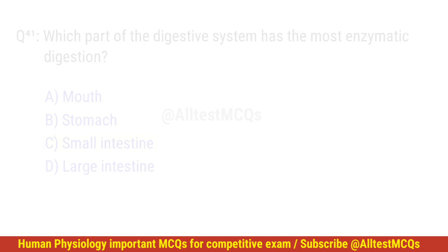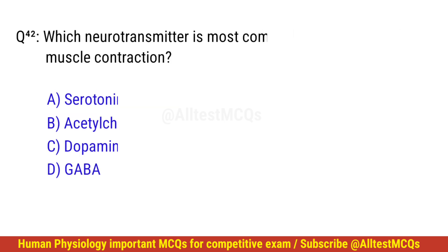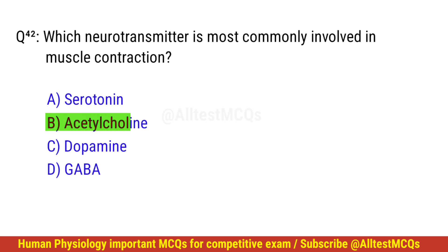Question number 43. Which neurotransmitter is most commonly involved in muscle contraction? The right option is B: Acetylcholine.